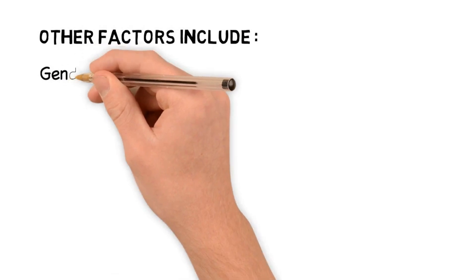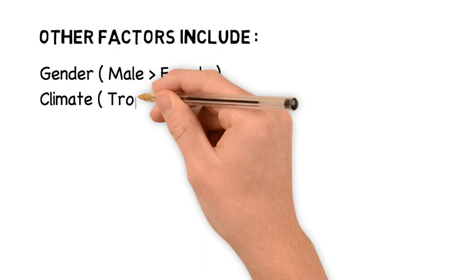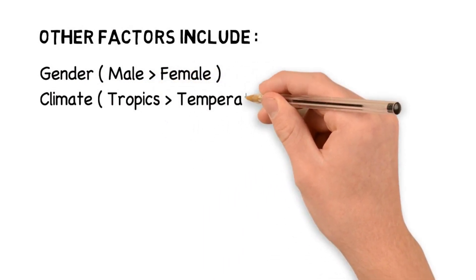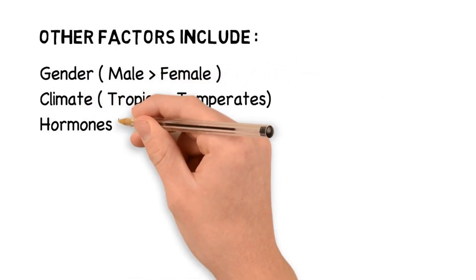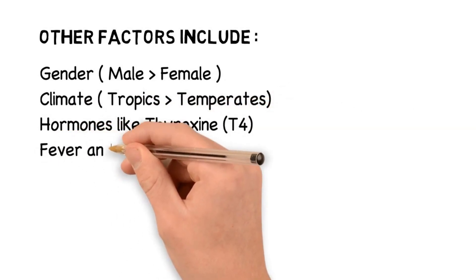Other factors include: number one is gender, being more in males than in females. Second is climate, being more in the tropics than in the temperate zones. Hormonal factors like thyroxine or T4 also influence metabolism. Last but not the least, fever and illness.